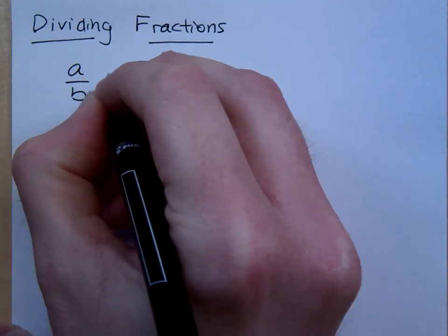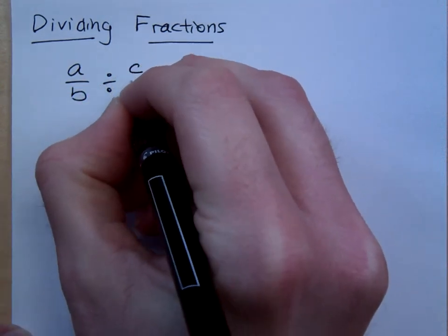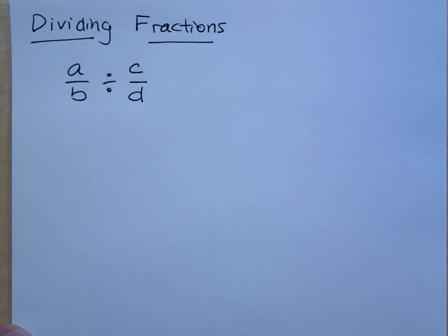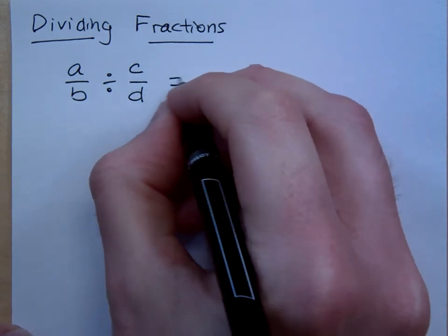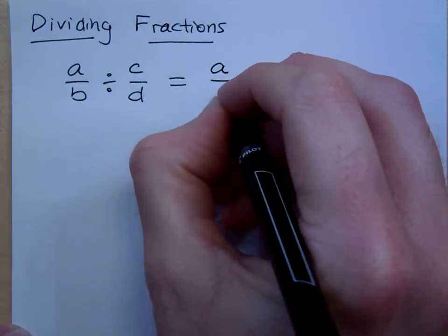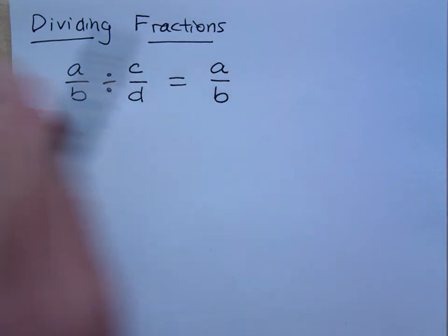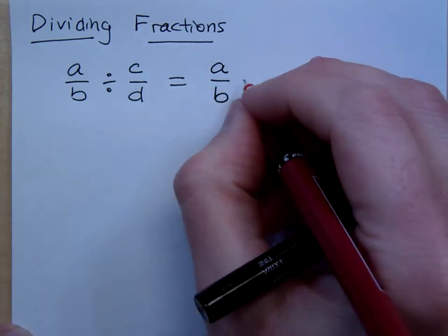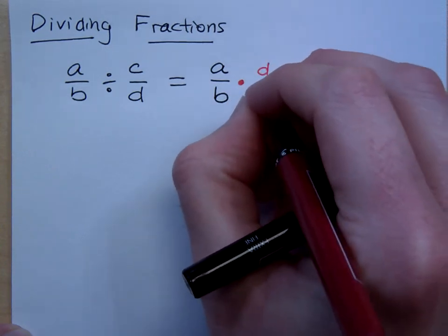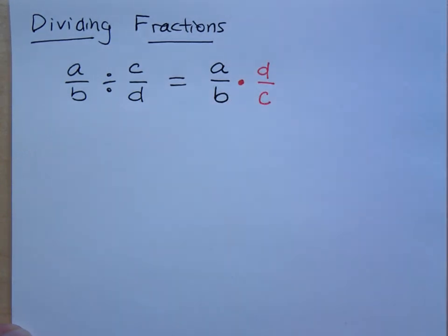If you have a fraction divided by another fraction like this, do not do anything with the first fraction. You keep it exactly the way it is, but you turn this division into multiplication, and you multiply times the reciprocal. So you turn it into a multiplication problem.